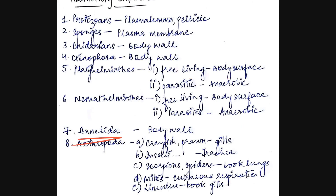Now coming to annelida. In annelida, the body wall forms the main respiratory organ, and so the respiration is termed as cutaneous respiration for these organisms. Examples are nereis, earthworm and leech.